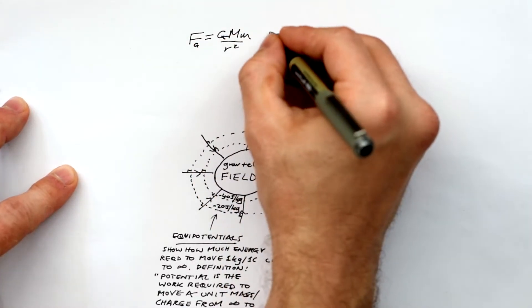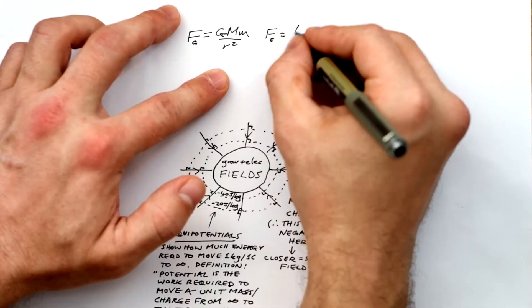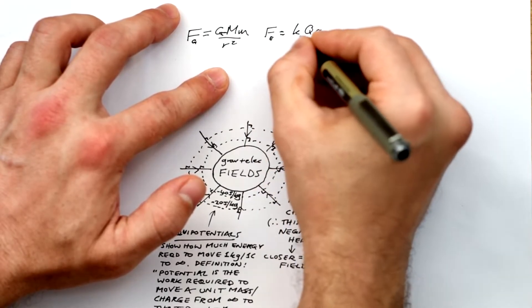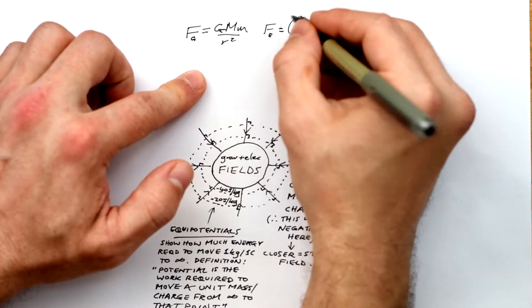Force of attraction between two masses is equal to GMm over r squared. I'll write in the word forms a little bit later on. But its force is proportional to the product of the two masses, and inversely proportional to the square of their separation.